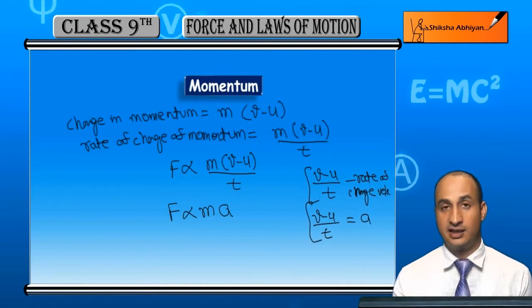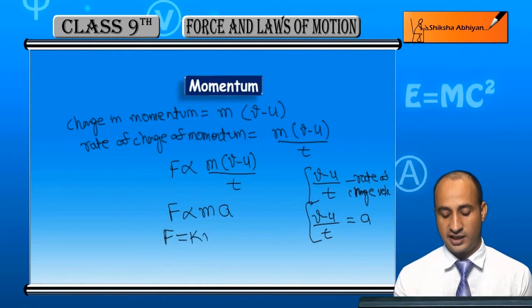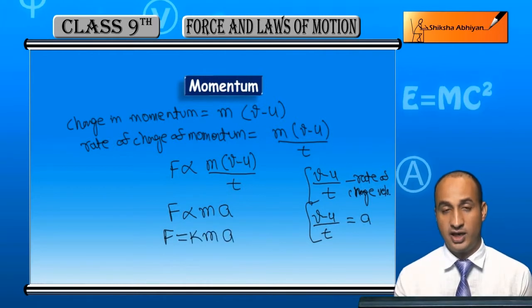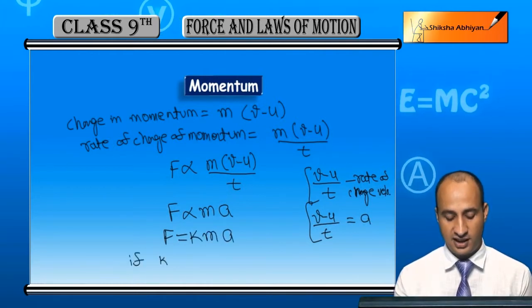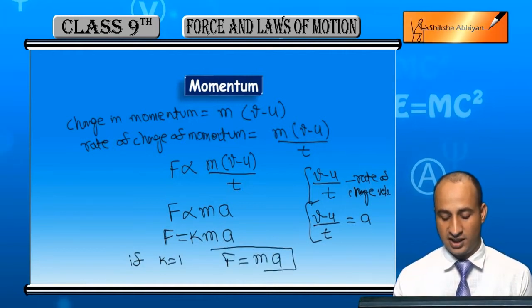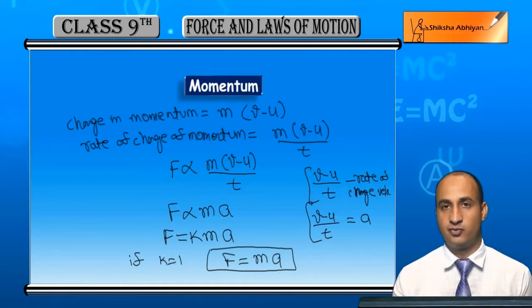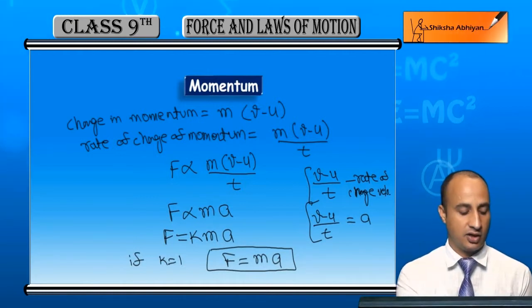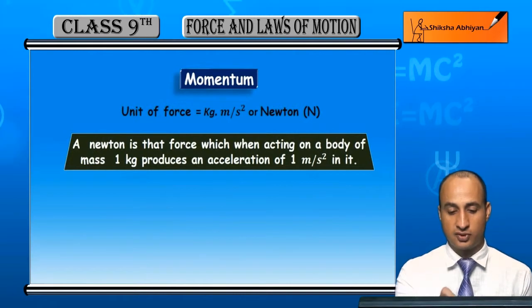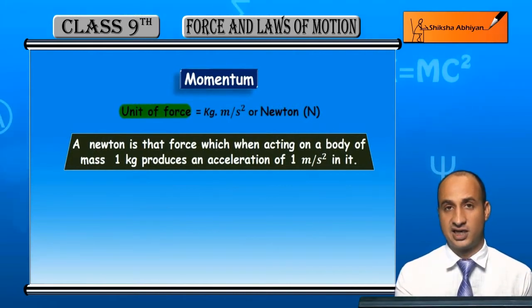To main likh sakta hoon: force is directly proportional to m into a. Proportionality constant k laate hain, to F = kma. Aur if k = 1, to aapko milega F = ma. Yahi aapka Newton's second law of motion hai.